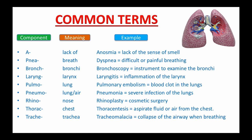Here is a list of some common terms relating to the respiratory system that you should know for coding purposes. 'A-' meaning lack of — for example, 'anosmia,' lack of the sense of smell. 'Dys-' meaning difficult — for example, 'dyspnea,' difficult or painful breathing. 'Bronch/bronchi' — for example, 'bronchoscopy,' an instrument to examine the bronchi.